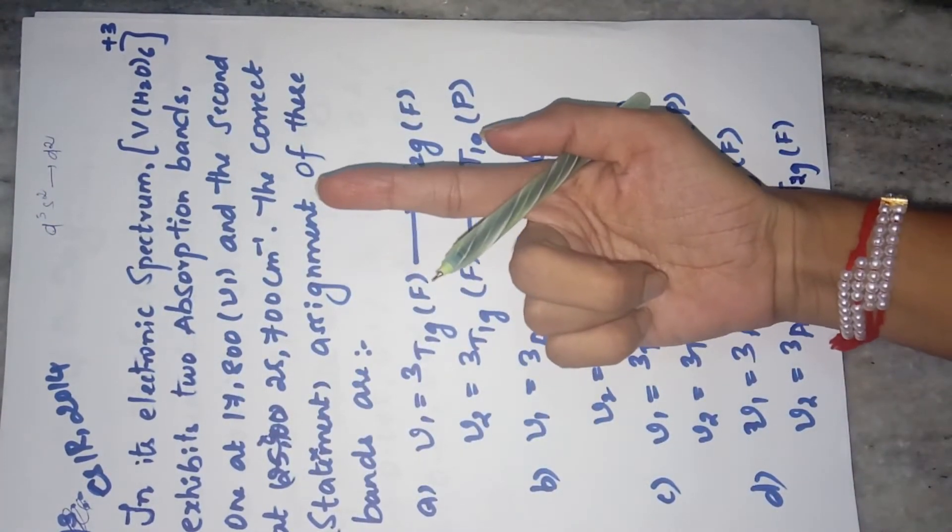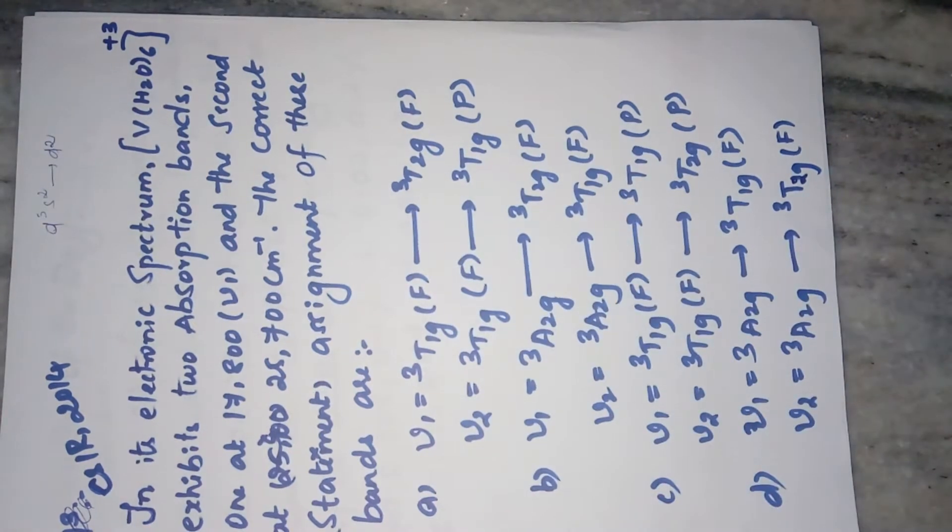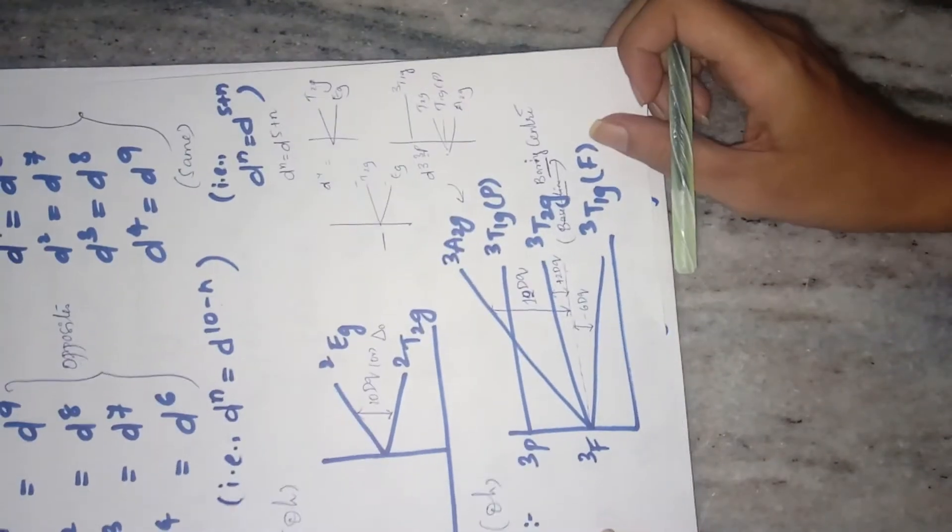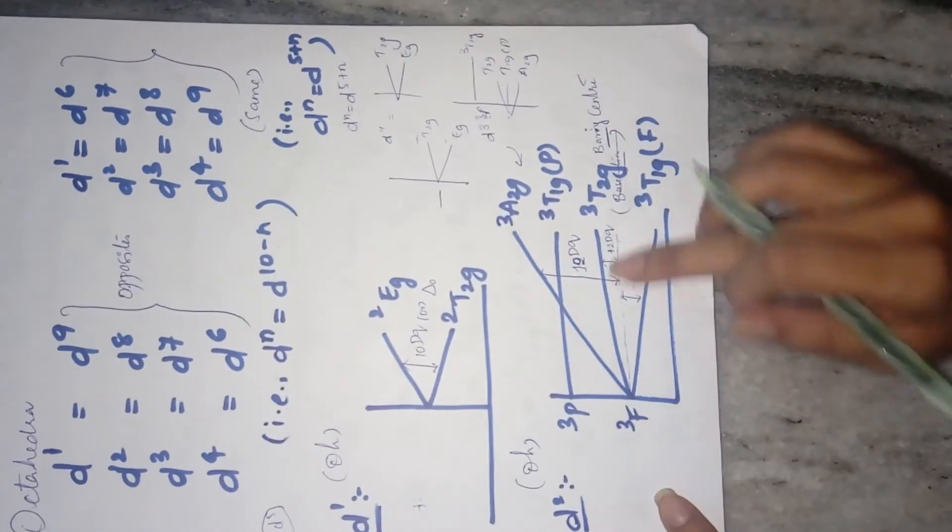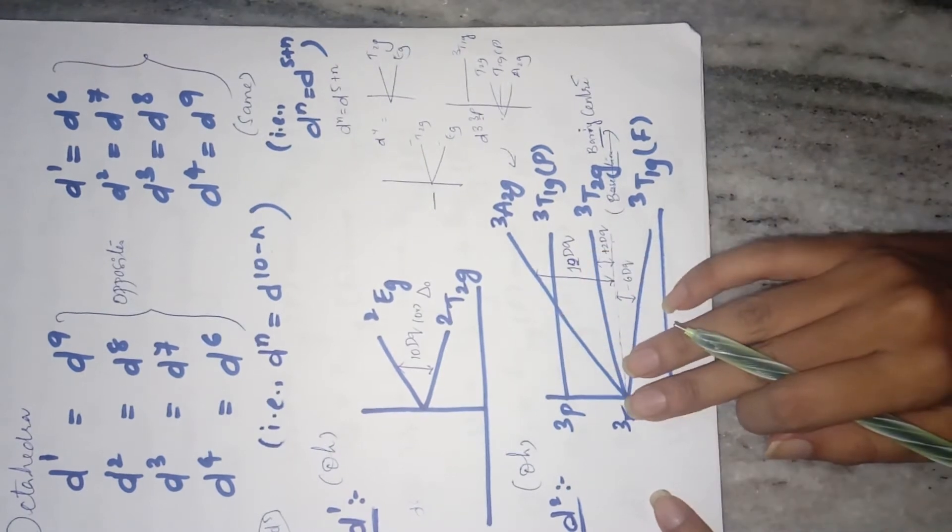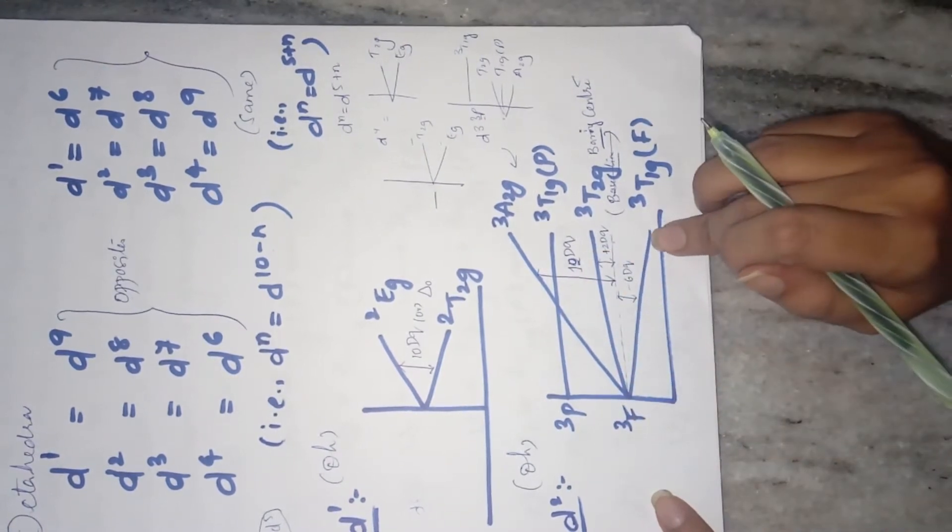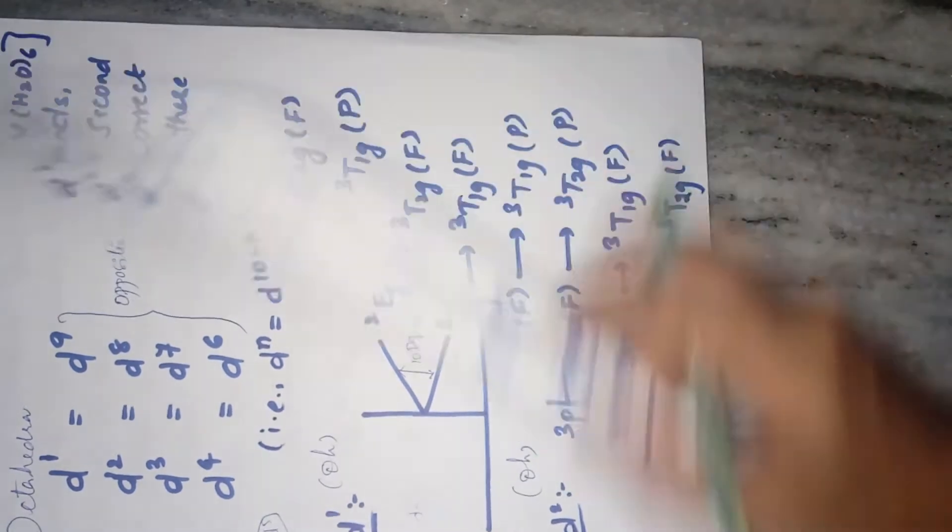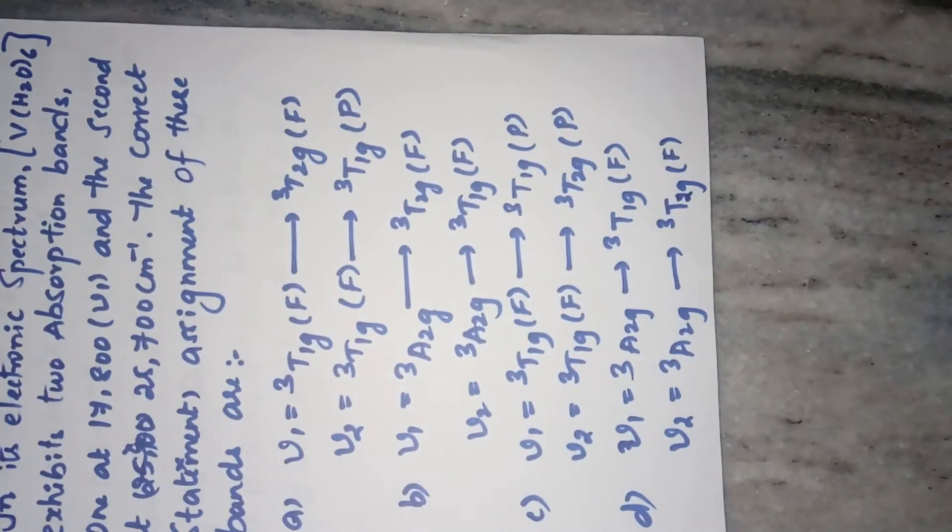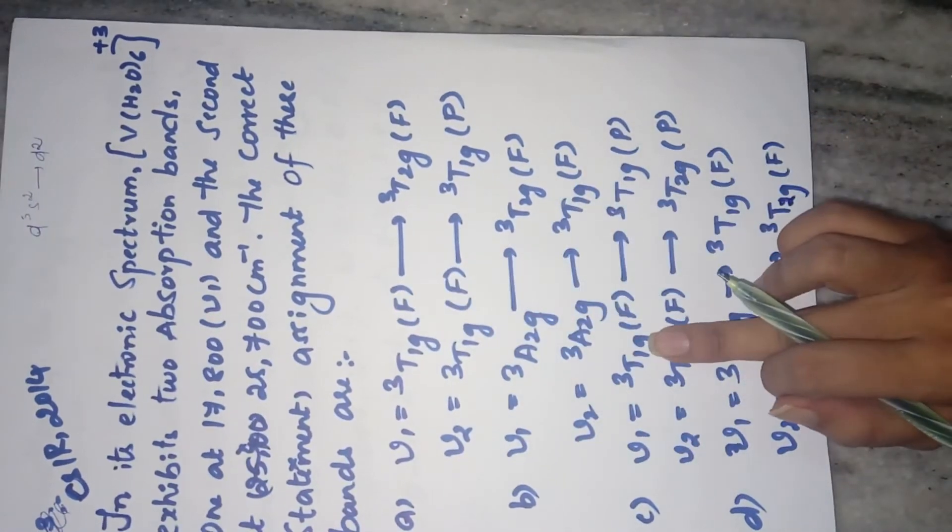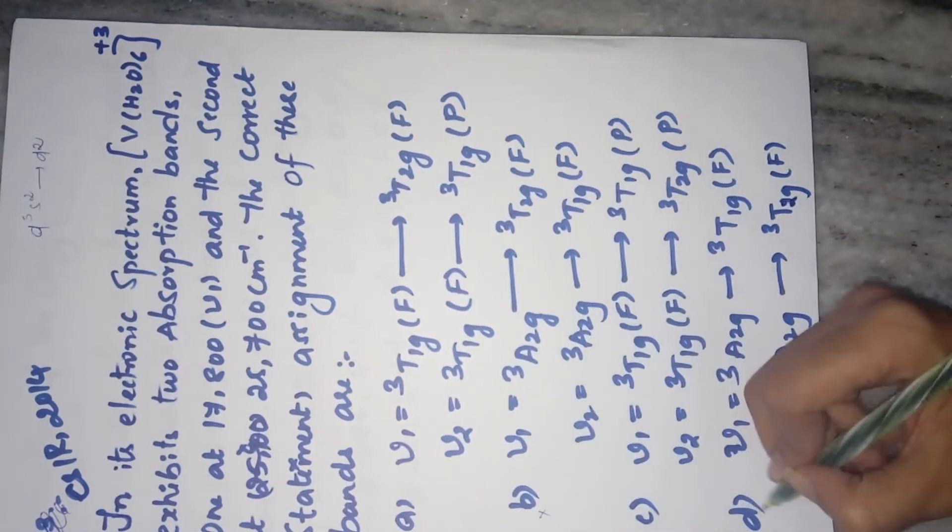And I have already yesterday shown you, so I will draw again. This is my previous class explanation where I have drawn my d2 Orgel Diagram. And in that d2 Orgel Diagram, you can see what is the ground energy state. It is triplet t1g f. And where do you find triplet t1g f? It is there in the option A as well as in the option C. So you can eliminate option B and D.